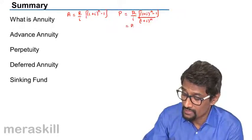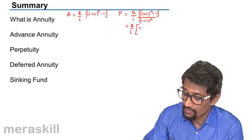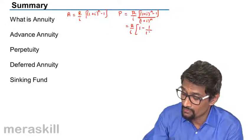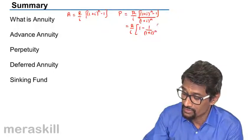The same can also be written as R upon I into 1 minus 1 upon (1 plus I) raised to N. Even this is fine.